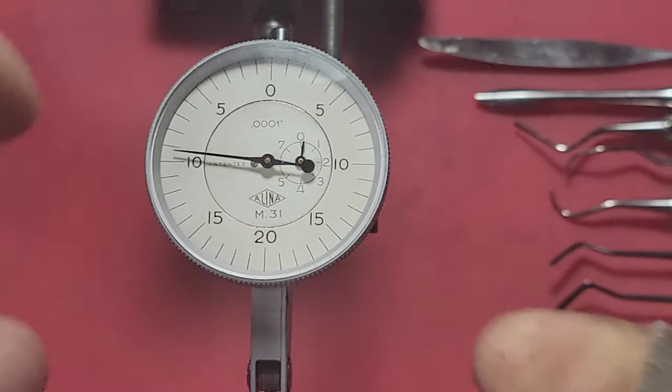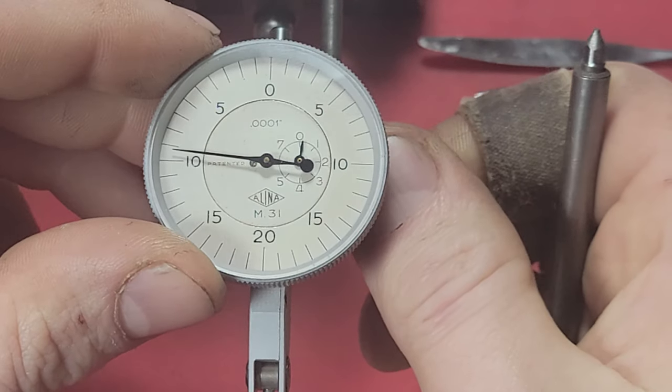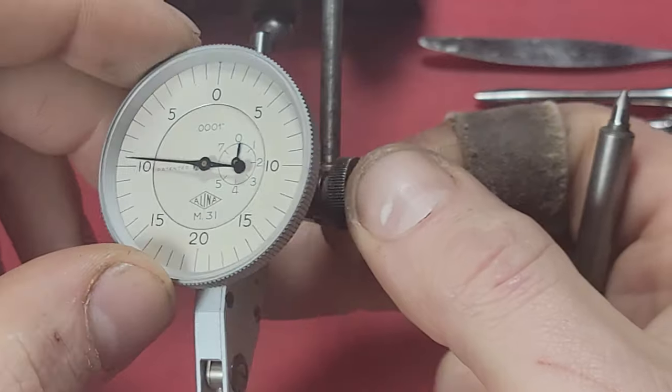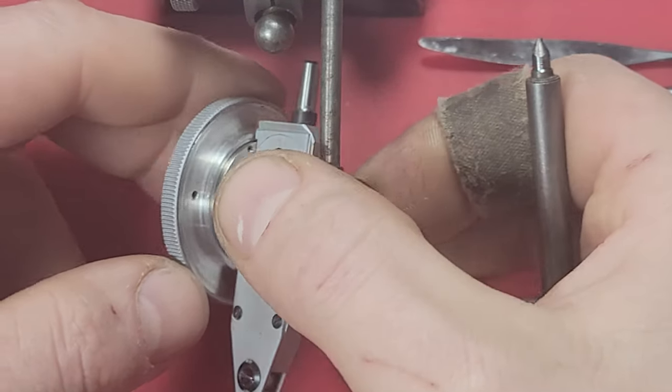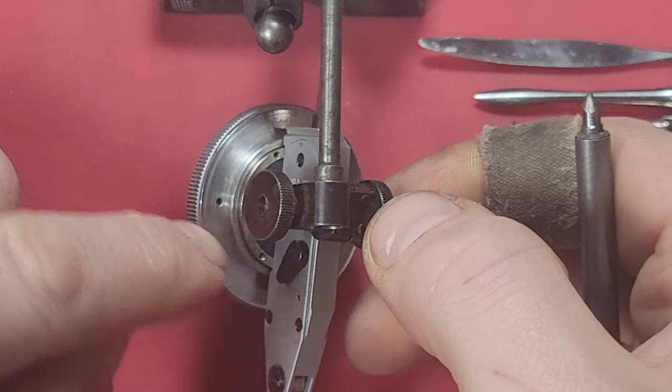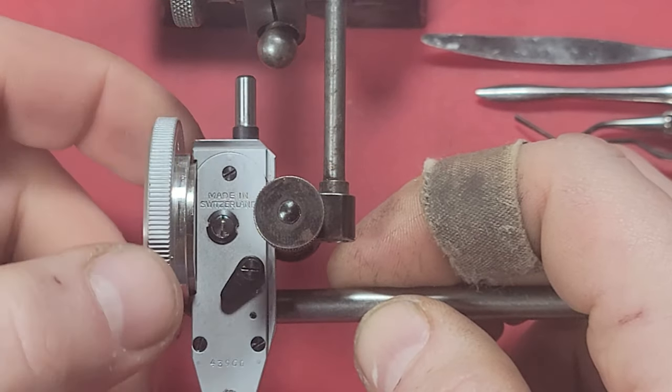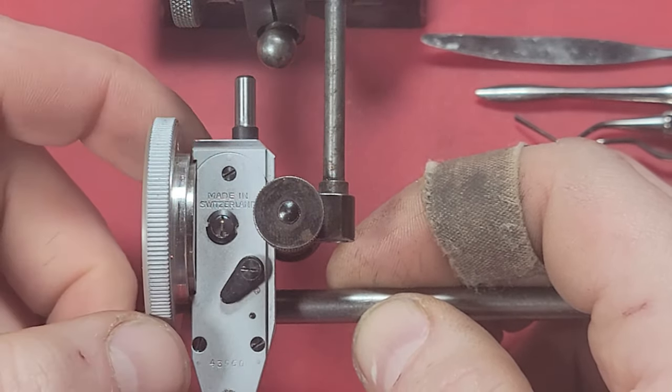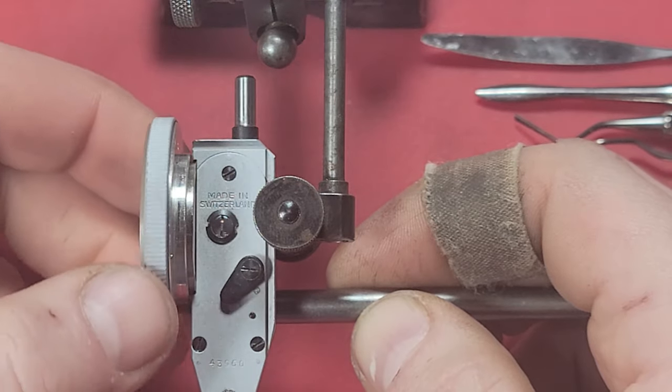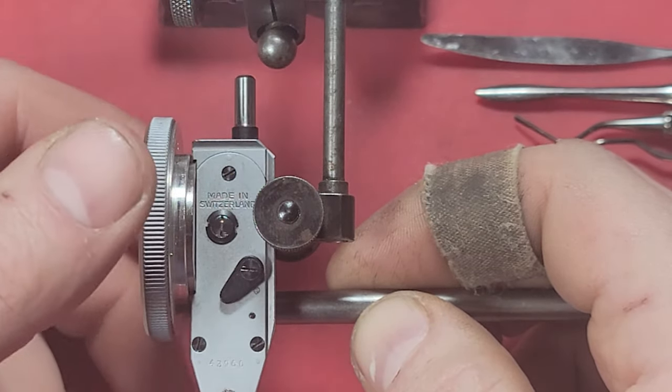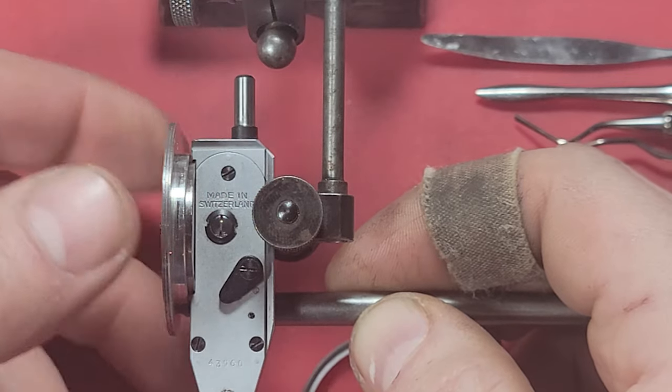Now the first thing I'm going to do is remove the bezel glass. I'm going to turn this upside down, and there are pinholes in the back of the face. It'd be best if I had a watchmaker's wrench, but I don't, so I'm just putting a pin in there holding it still while unthreading the bezel glass.